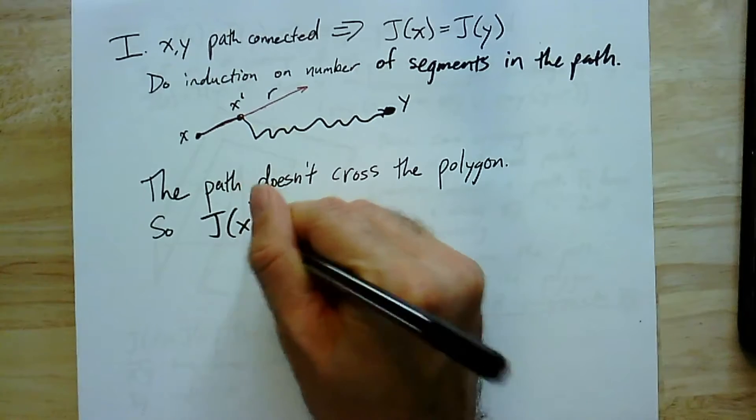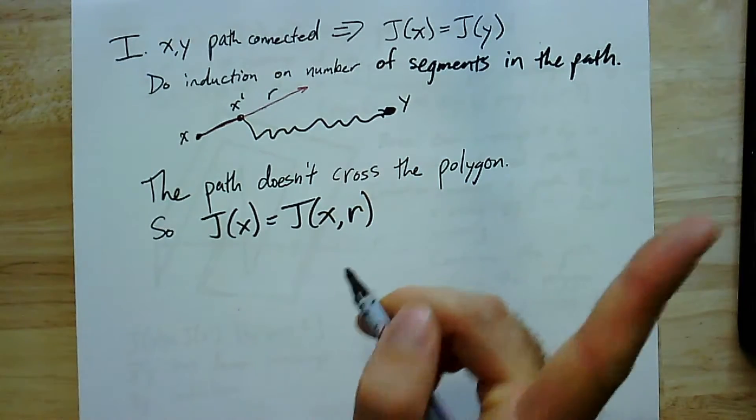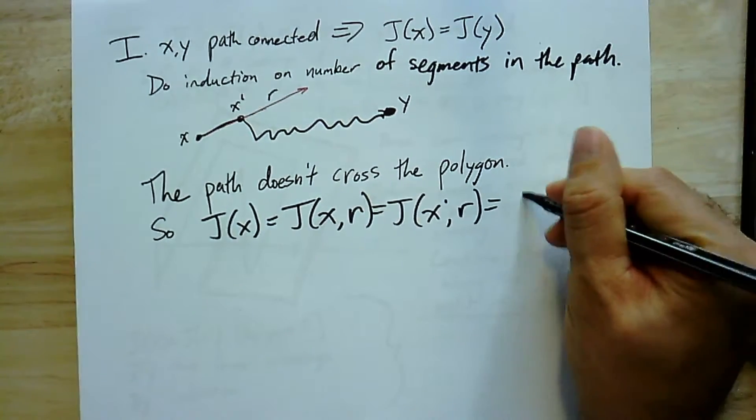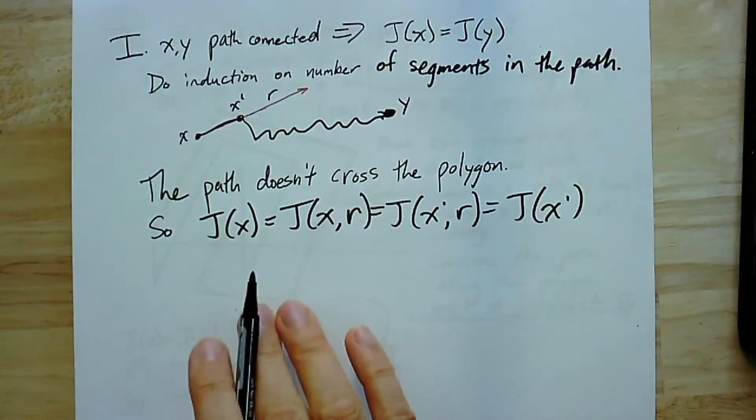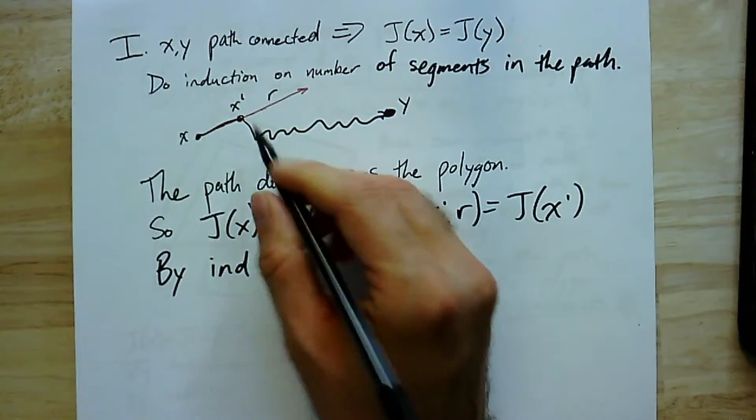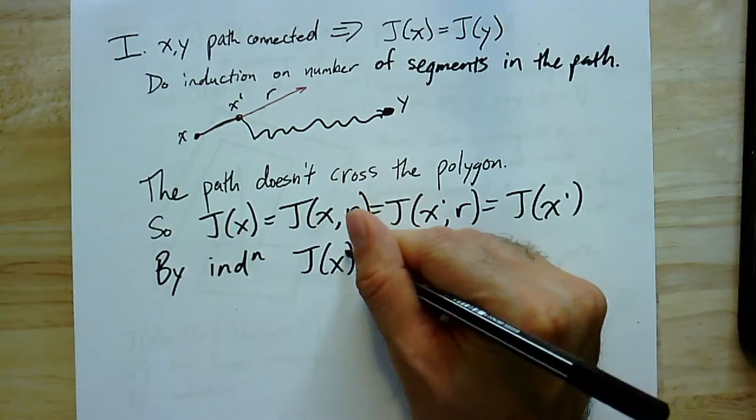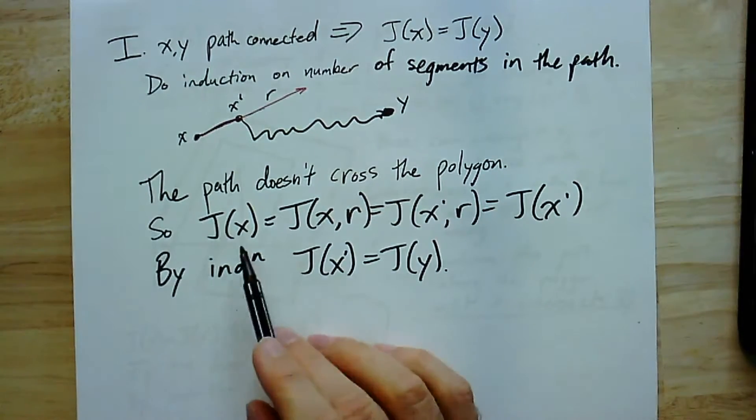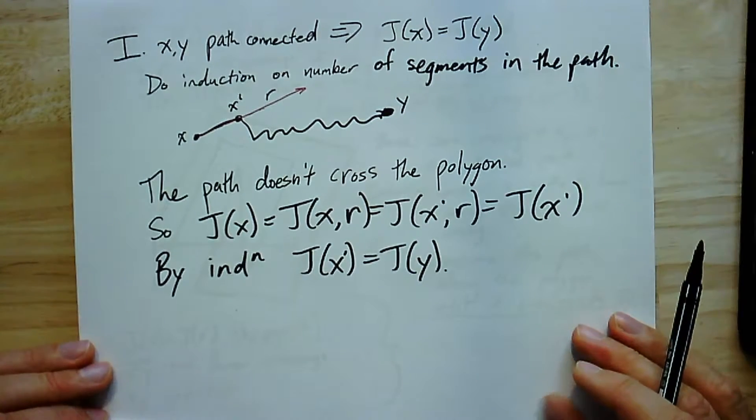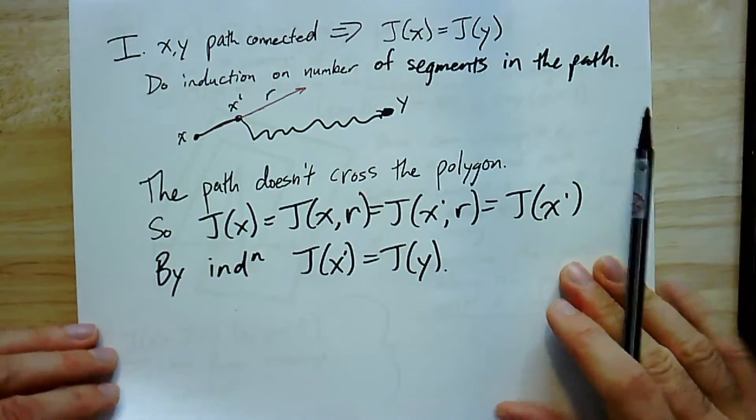And so we get that j(x) here is equal to j(x',r), which again, we just call j(x'). So that's, again, just showing that j(x) and j(x') are the same. So by induction, because now the rest of the path has fewer segments, by induction we get that j(x') is equal to j(y), and we're done. So we have j(x) equals j(x') equals j(y). And so just by using the path and this definition of this function, we see that two points that are connected by a path also have the same j value.